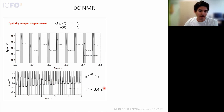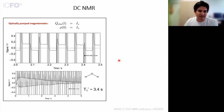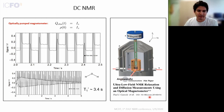This technique was used in a number of relaxometry experiments in a paper by the Pines Lab. Magnetometers work well at low magnetic fields, and at high magnetic fields you have to balance against field stability.